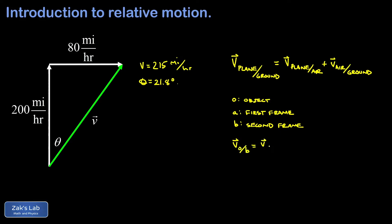is equal to the velocity of the object with respect to reference frame a, plus the velocity of reference frame a with respect to reference frame b. In the airplane example, the air was the first reference frame and it was moving with respect to the ground, which was the second reference frame.